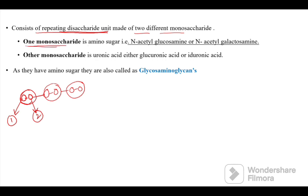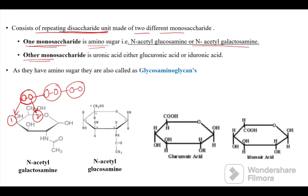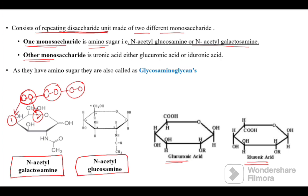One monosaccharide present in the repeating disaccharide is an amino sugar — that is N-acetylglucosamine or N-acetylgalactosamine. The other monosaccharide is a uronic acid — either glucuronic acid or iduronic acid. Because they contain amino sugars, these compounds are also called glycosaminoglycans.